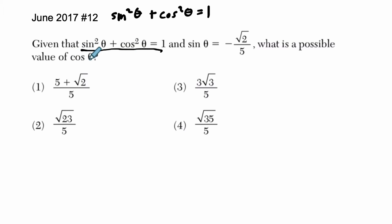So here if we plug this in, essentially we're using the Pythagorean theorem. In other words, the sine of theta is radical 2 over 5. So if we're using this Pythagorean theorem, we square that.